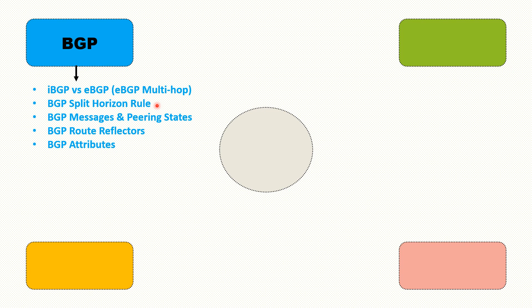You should know about BGP messages and its peering states. For example, if asked about the notification message in BGP, you should be able to explain it. For peering states, you should know what happens when your peering is stuck in active state or connect state in BGP neighbor relationships — these are commonly asked about in interviews.